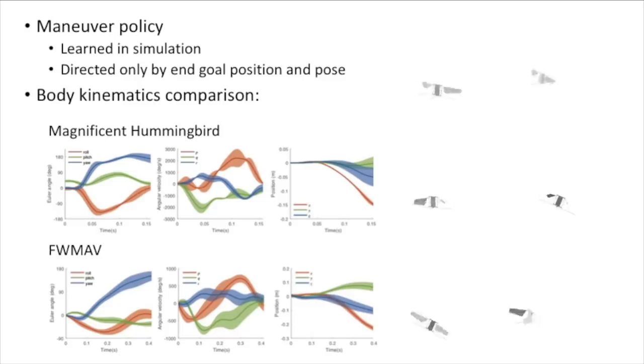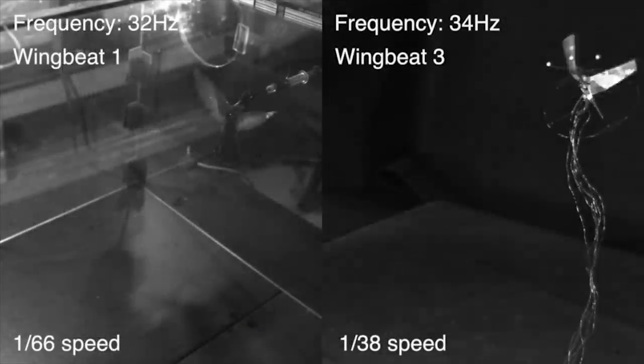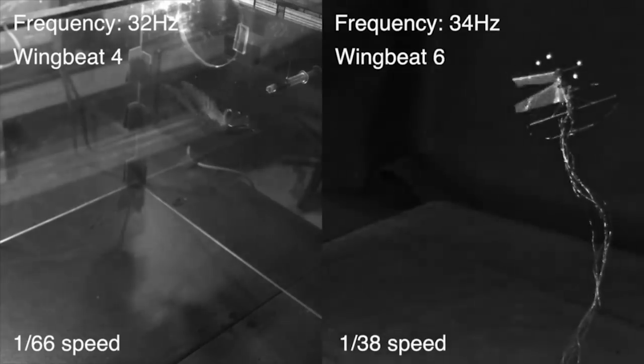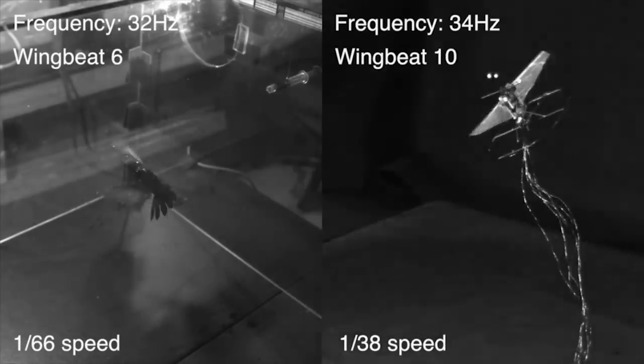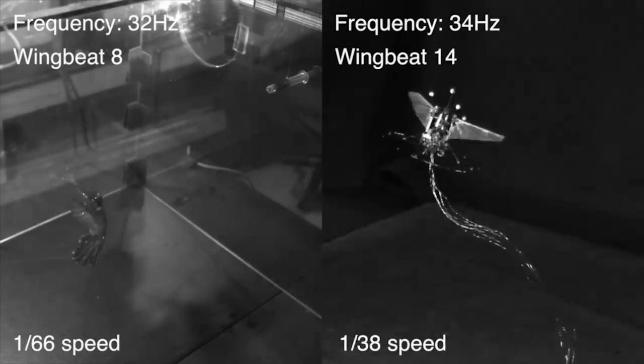The control algorithm has to be robust and adaptive. If you have wind gusts and external disturbances, or bumping into a wall, you can still deal with that. So the control algorithm itself should have some robustness built into that.